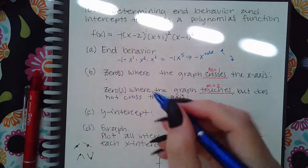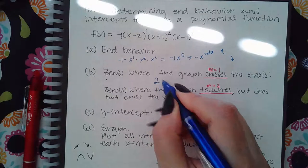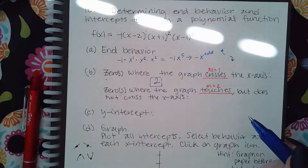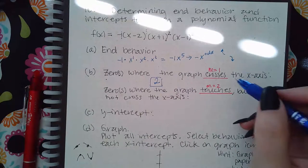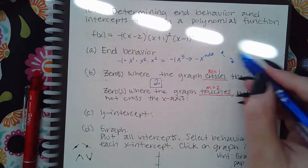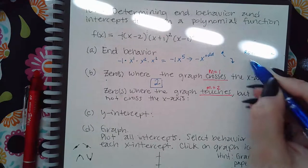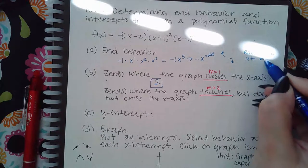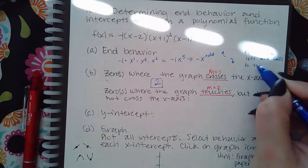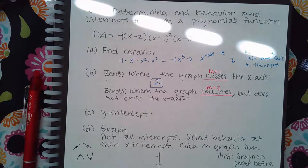That factor, when I set it equal to zero and solve, gives me the zero or x-intercept of x equals two. So that's what I put in there. The end behavior for this function is rises to the left and falls to the right — just in case you have to select that from a drop-down in the computer.